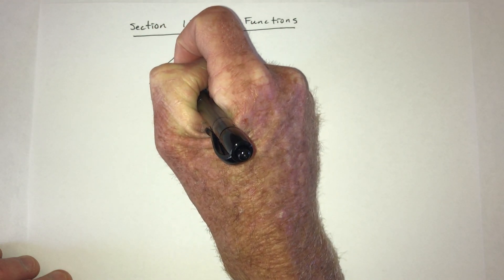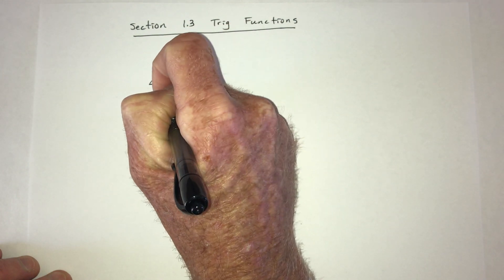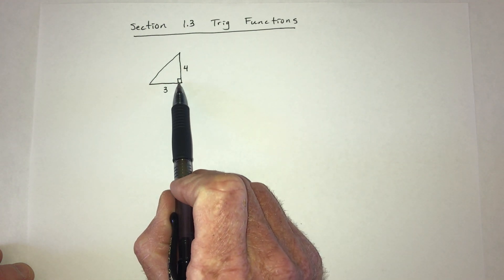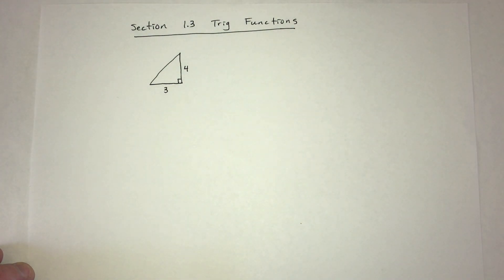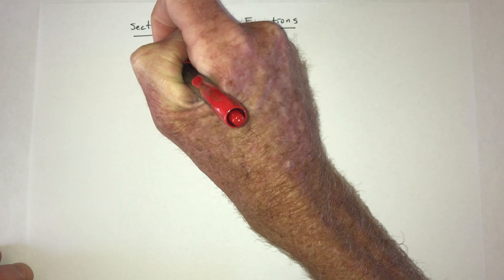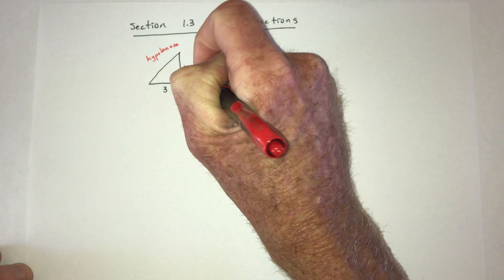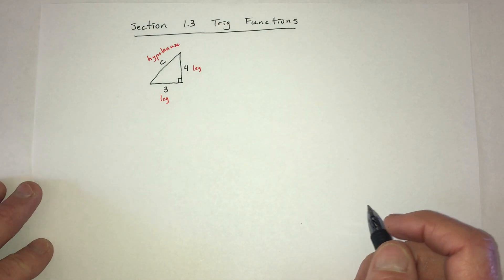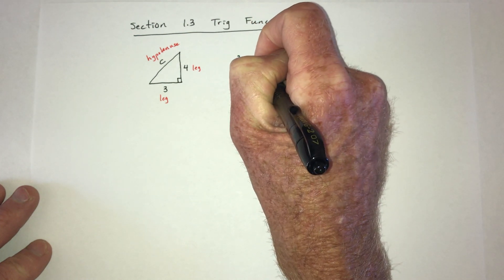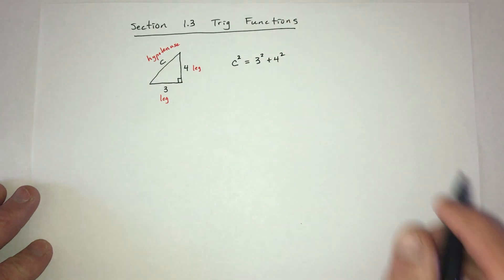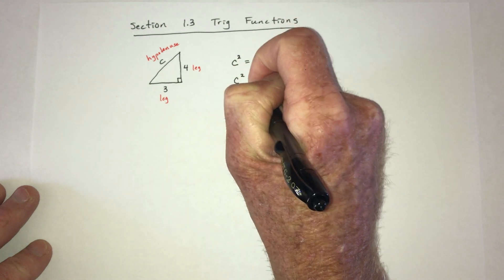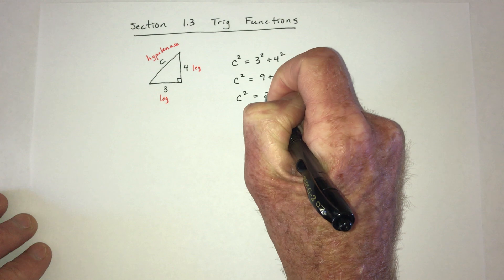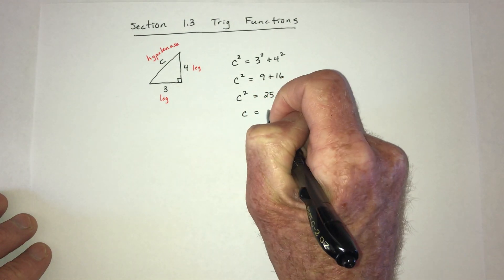Suppose that you have a right triangle and these two sides are 3 and 4. I need to find the missing side. Going across from the right angle, that side is called the hypotenuse, and the other two are called legs. The Pythagorean theorem says the hypotenuse squared equals the sum of each leg squared. So c squared equals 9 plus 16, c squared equals 25, and c equals 5.